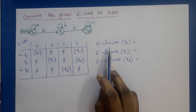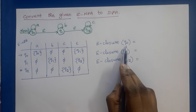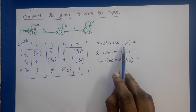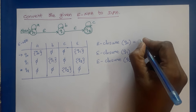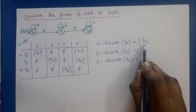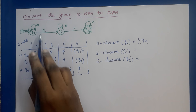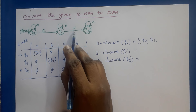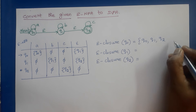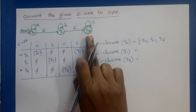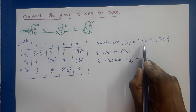Next we need to find the epsilon closure of all the states. Epsilon closure of a state represents the set of all states reachable from that state by following only epsilon transitions. To find the epsilon closure of Q0, first we include Q0 itself. Then we check if there is any epsilon transition from Q0. Q0 has an epsilon transition going to Q1, so we include Q1. From Q1 there is an epsilon transition to Q2, so we include Q2. Q2 has no epsilon transition. So epsilon closure of Q0 is {Q0, Q1, Q2}.